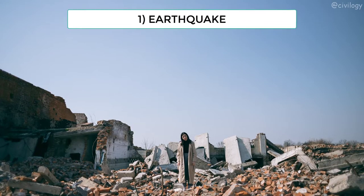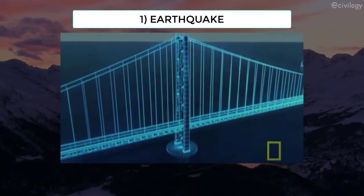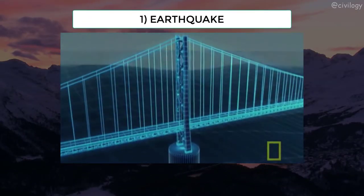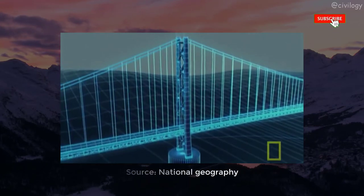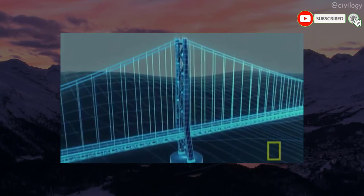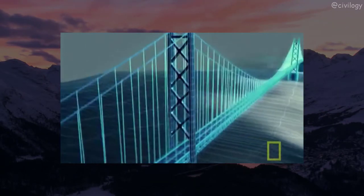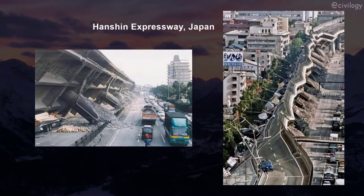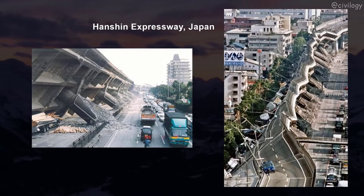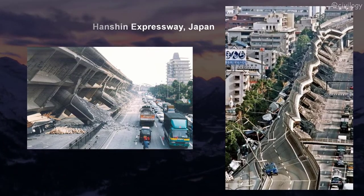Earthquake leads to vertical and horizontal ground motions that can result in the failures of bridges. Both vertical and horizontal ground motions may cause the liquefaction of the soil at bridge foundations, which can greatly reduce the load-carrying capacity of the foundations, leading to bridge collapse. An example is the collapse of 18 spans of the Hanshin Expressway in Fukae during the 1995 Kobe earthquake.